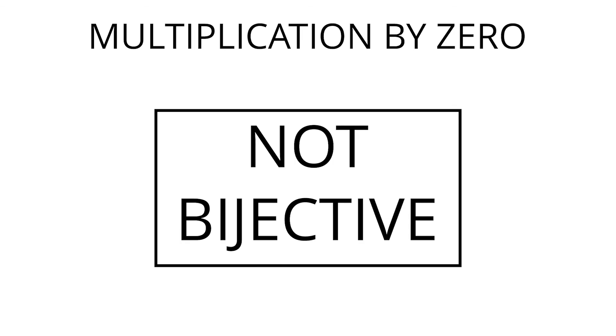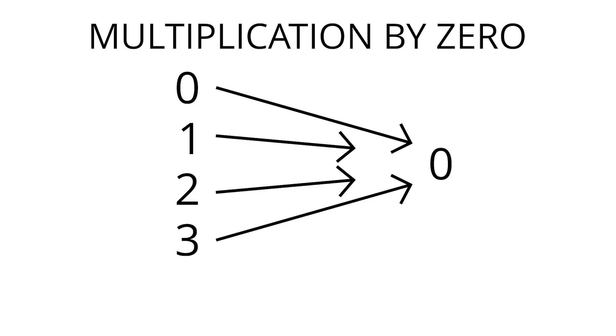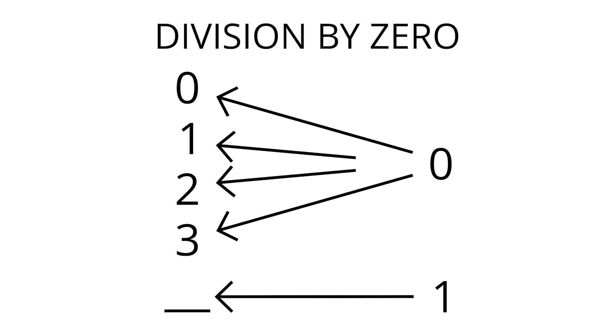Multiplication by zero is different, though. Any number multiplied by zero is zero, and no number can be multiplied by zero to give us a non-zero result. If we try to define the function division by zero by reversing these arrows, we have major problems.